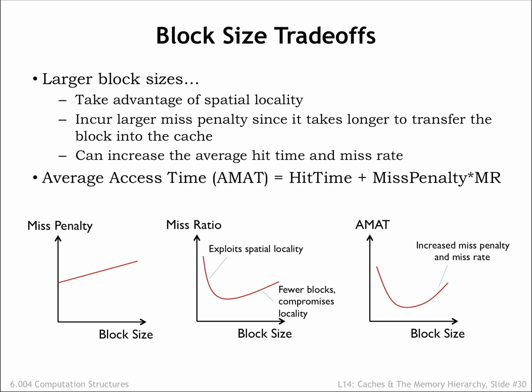Combining the information in these two graphs, we can use the formula for average memory access time to choose the block size that gives us the best possible average memory access time. In modern processors, a common block size is 64 bytes.